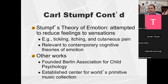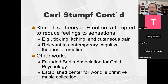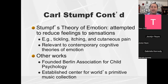Other things that Stumpf did: he founded the Berlin Association of Child Psychology, which was at the cutting edge of trying to understand the developmental course from children to adults. He also collected musical instruments and musical products, and created a center for world's primitive music.